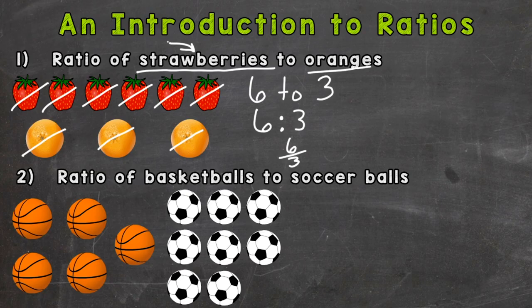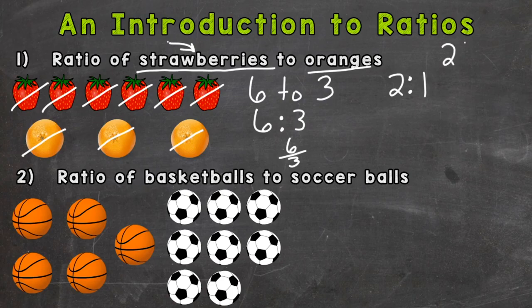And three is a common factor between six and three, and it's the greatest common factor. So let's divide both the six and the three by three. Well, six divided by three is two, and three divided by three is one.